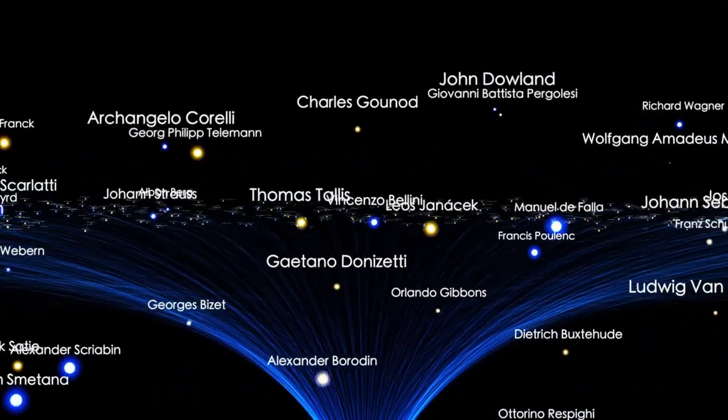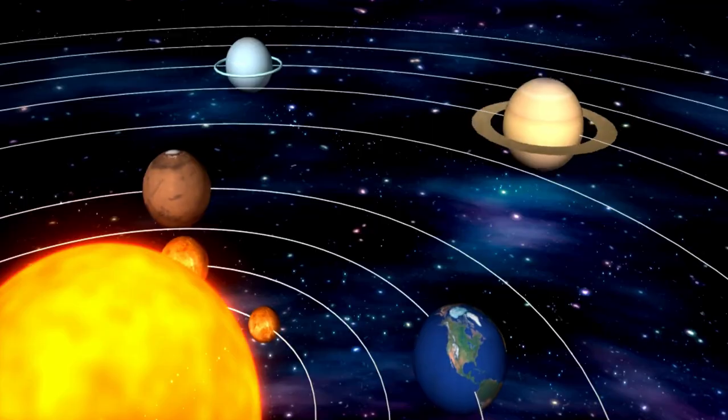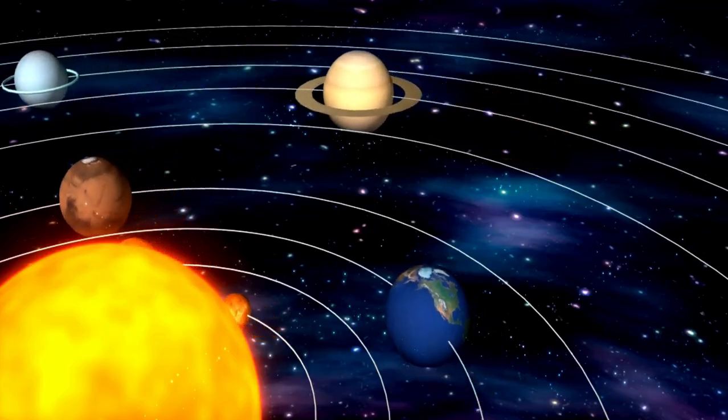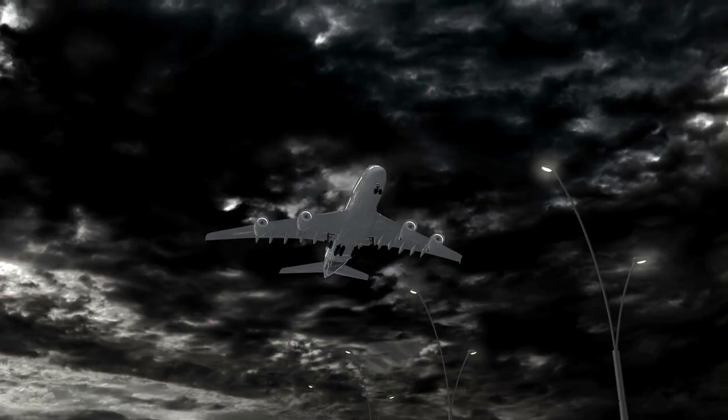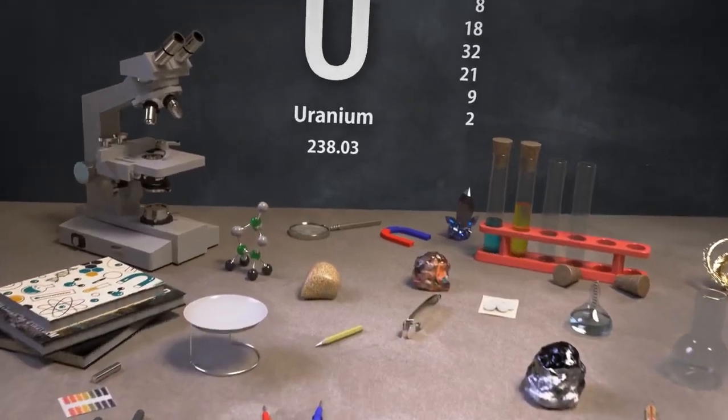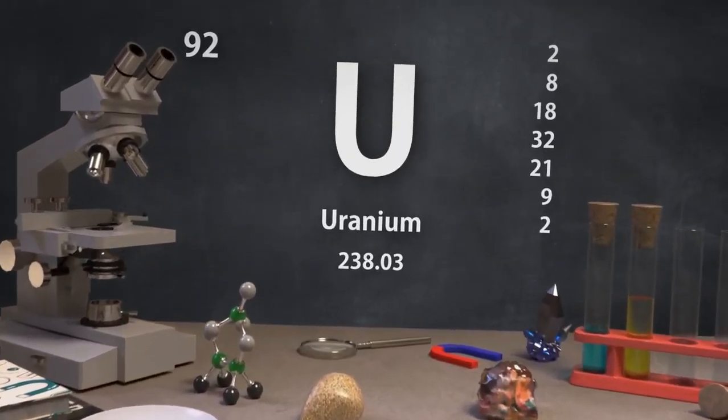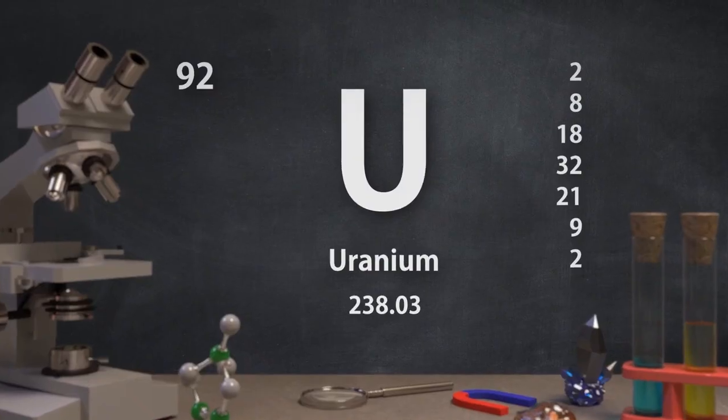Both probes carry golden records with Earth sounds and music, intended as messages to any potential extraterrestrial life. As of January 2024, Voyager 1 is about 14.9 billion miles from Earth, making it the most distant human-made object in space.